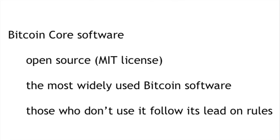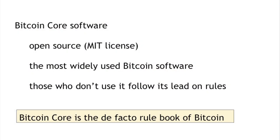People who are building alternate Bitcoin software typically try to mimic the rule-defining parts of the Bitcoin core software — they look at the parts that check which transactions are valid, which blocks are valid, and they try to behave in the same way as the core software. The Bitcoin core defines the de facto rule book of Bitcoin. If you want to know what's valid in Bitcoin, if you want to know what the rules are, this is the place to look.